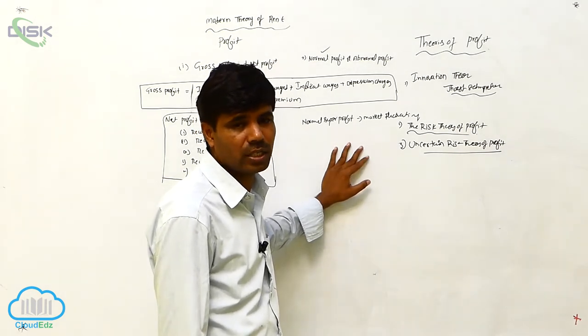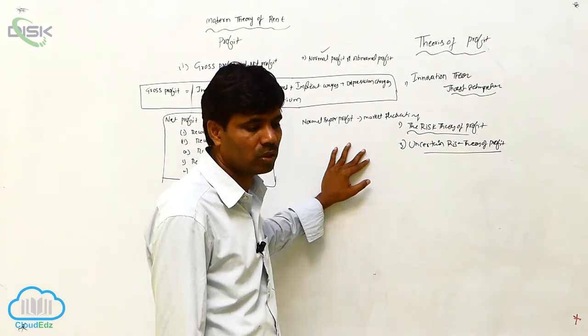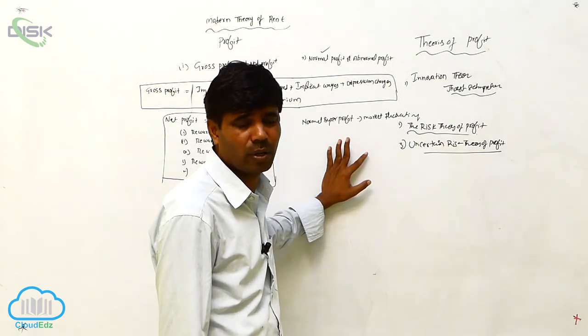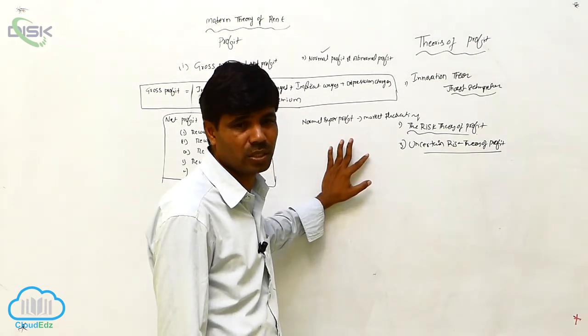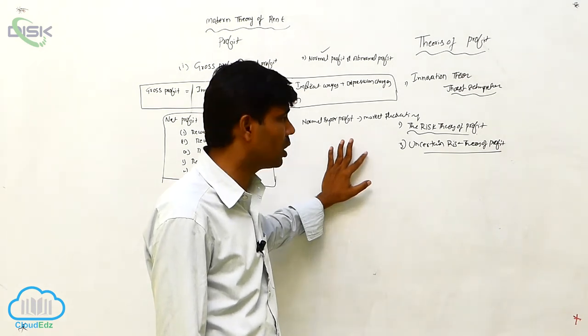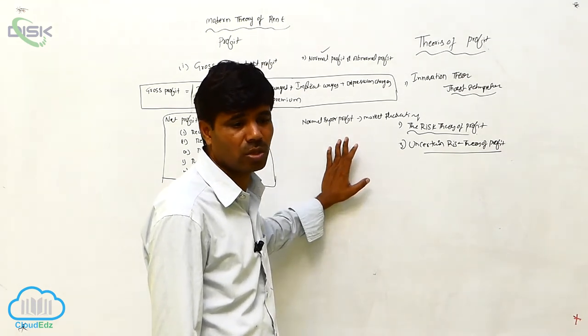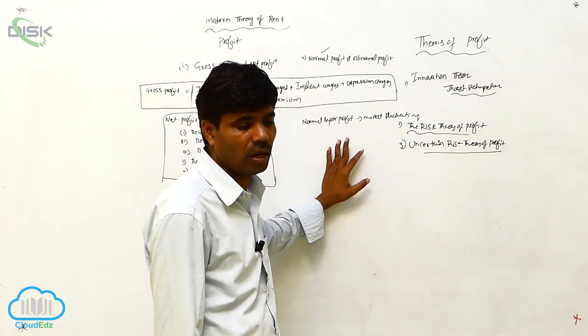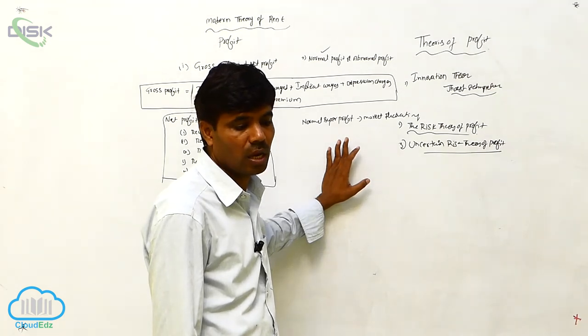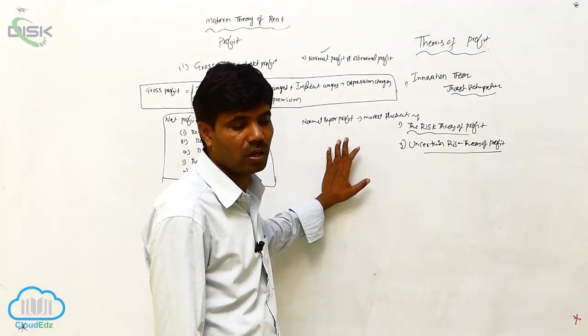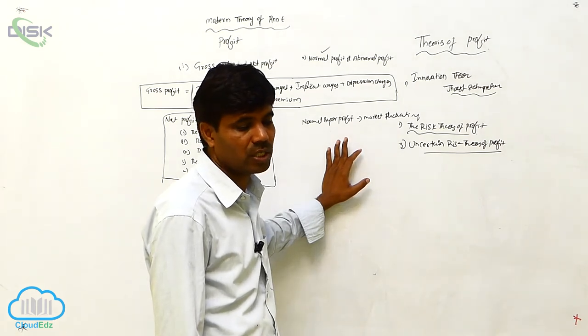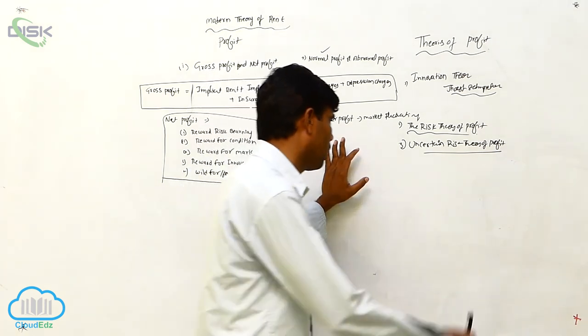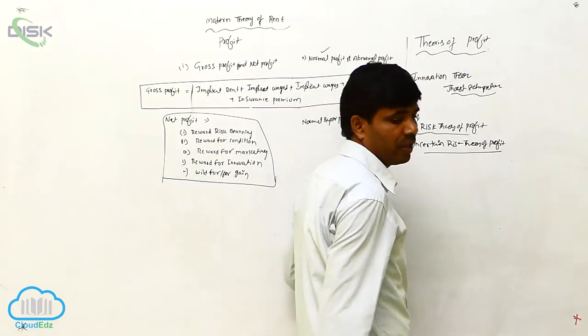Because of fire incidents and climates, sometimes we can face the problem of insurance. Whatever it is, they are paying the insurance. We have to maintain insurance also. Moreover, according to Knight, profit is the reward of uncertainty bearing, which is the supply price of entrepreneurship. This is the theory of profit. Thank you.